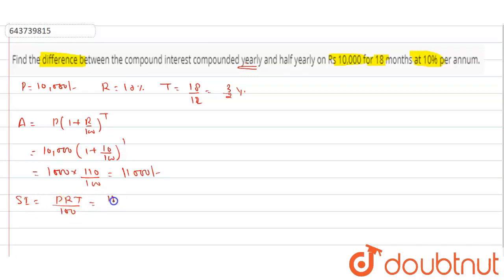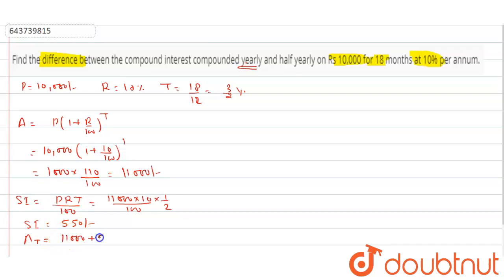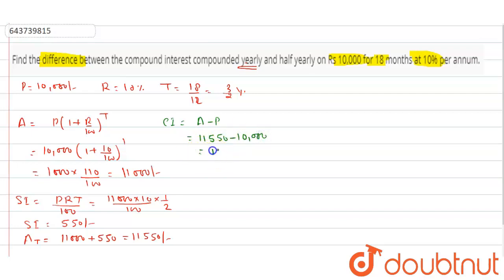For the remaining half year, we calculate simple interest: SI equals P times R times T upon 100, where P is 11,000, R is 10 percent, and T is half year, giving SI equal to 550 rupees. So the total amount A yearly equals 11,000 plus 550, which is 11,550 rupees. The compound interest CI equals amount minus principal, so 11,550 minus 10,000 equals 1,550 rupees.